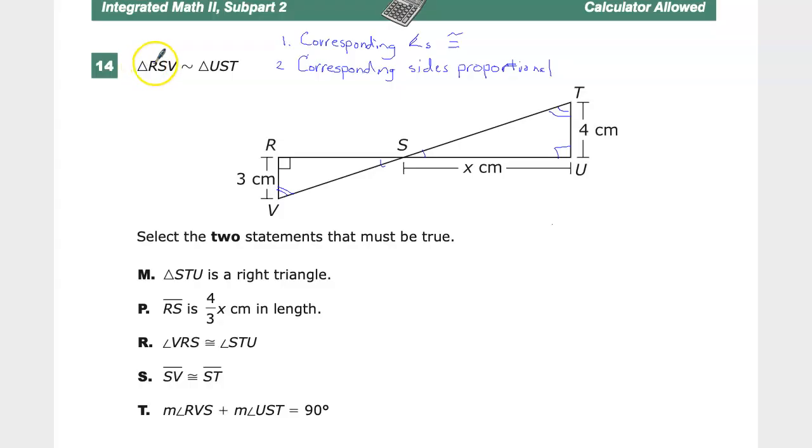Also, I can say that RS should have a proportion with US. SV should have a proportion with ST. And RV and UT similar. So this says that triangle STU is a right angle, so we can assess whether that's true or not.